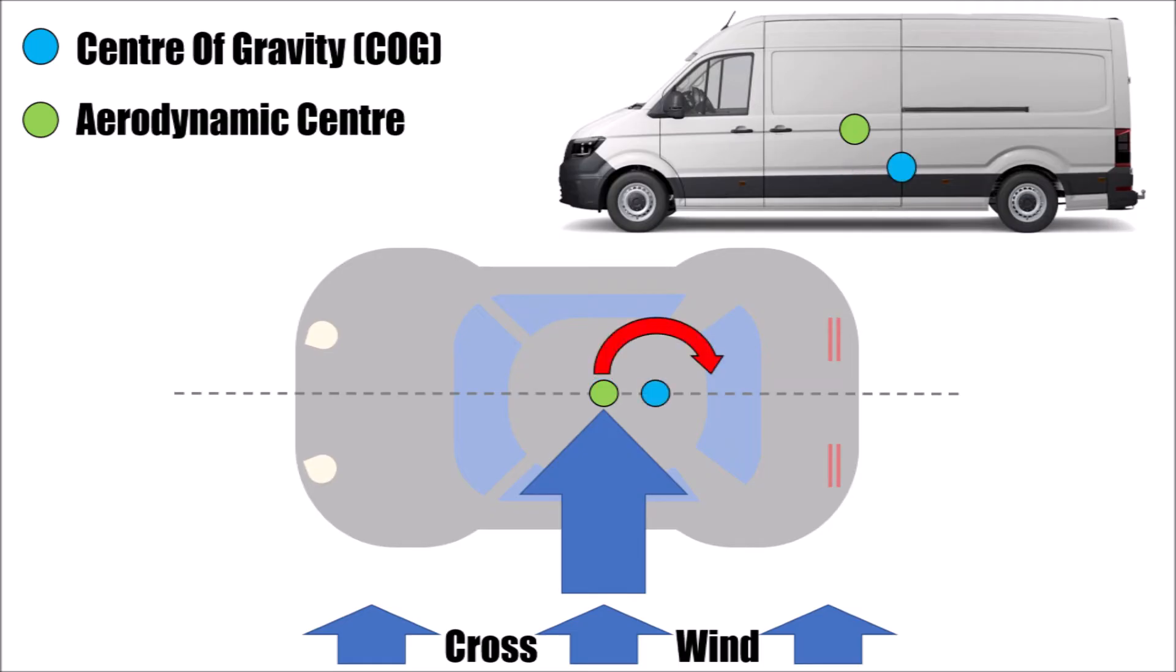Now we load the van further and the COG moves further back behind the aero center. Now the sensitivity turned around. Instead of turning into the wind and helping the driver, the van will now turn with the wind, which can cause dangerous situations. Also the further both points are away from each other, the longer is the lever arm and hence the moment to turn the car.